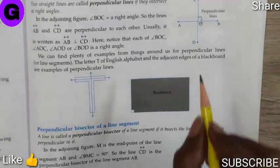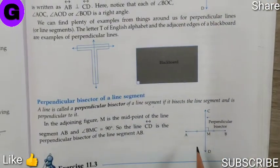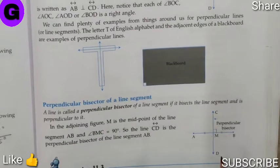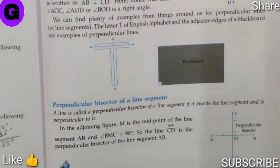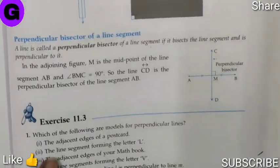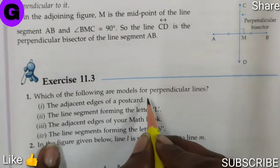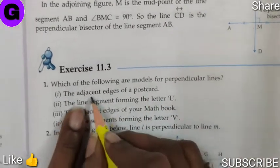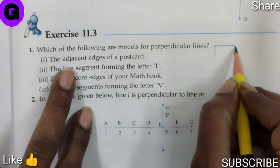Perpendicular line just forms a 90 degree, whereas perpendicular bisector divides the line through which it passes into two equal halves. Now we will proceed with exercise 11.3. It says which of the following are models for perpendicular lines? The adjacent side of a postcard. Now this is a postcard.